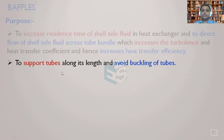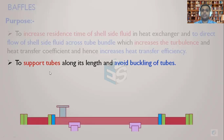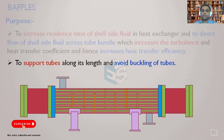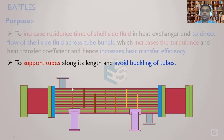Another important mechanical function of baffles is to support the tubes along their length and to avoid buckling. Without baffles, the tubes would be supported only from tube sheet to tube sheet, leaving a very high unsupported span. This would cause sagging of the tubes, increase flow-induced vibration in the tube bundle, and may cause tubes to impact one another. Baffles provide the necessary support along the unsupported tube span, preventing buckling and vibration damage.